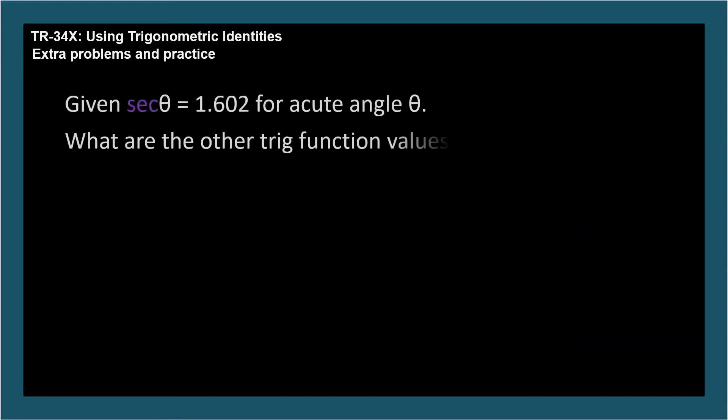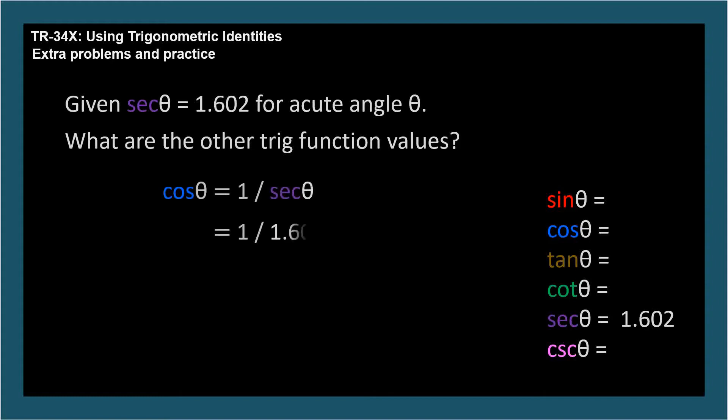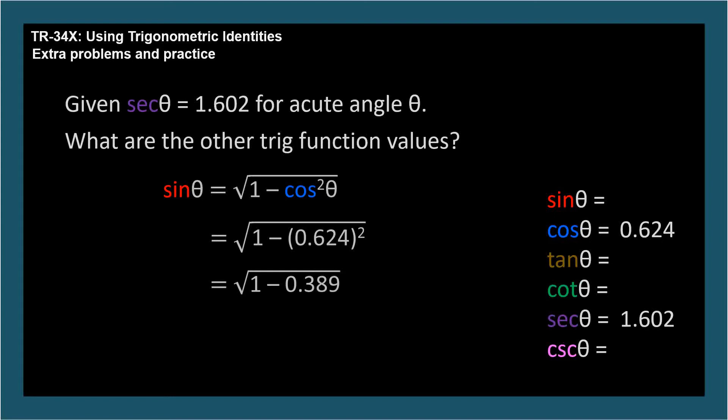Given secant theta equals 1.602, and theta is an acute angle, what are the other trig function values for theta? Here's the checklist, and we're given secant. Cosine is 1 over secant, so 0.624. Now that we know cosine, we're just the Pythagorean hop from sine, which turns out to be 0.781. Again, positive because theta is acute.